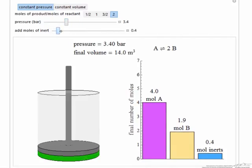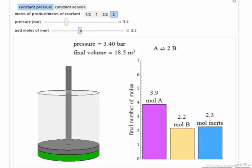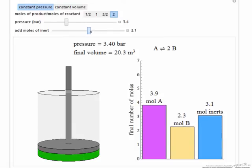If I instead add an inert, I'm pushing the equilibrium to make more B and less A because the inert is lowering the partial pressures.